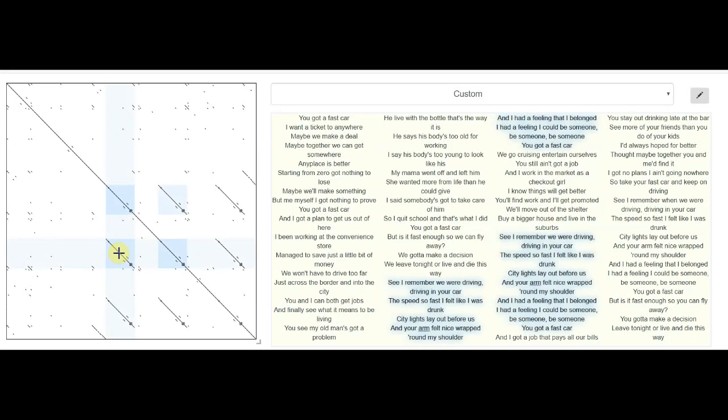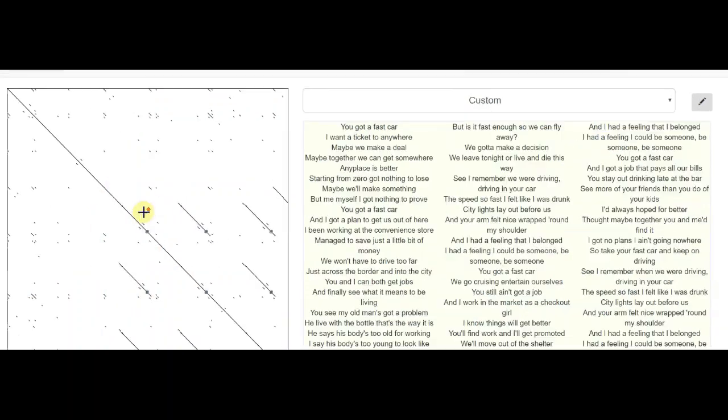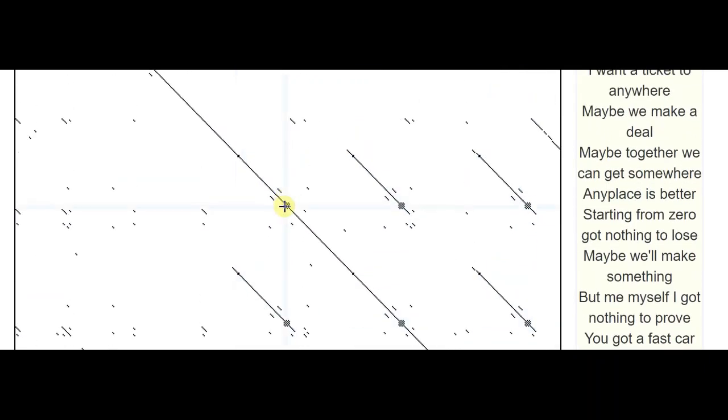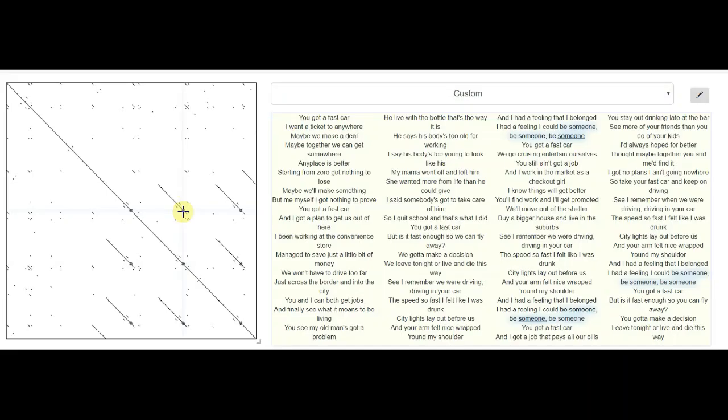One of the repeated sections appears as a sort of stripey square, as you can see at the ends of these diagonals. This happens when the repeated section is itself repetitive, i.e. it consists of a phrase repeatedly chanted. As we can see, the stripey square in the song is the phrase, Be someone.